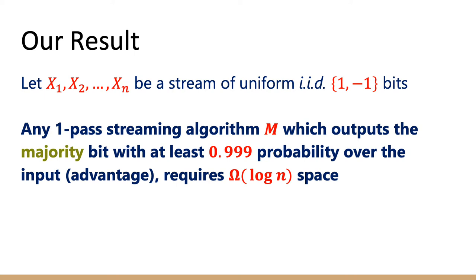What we prove is that majority is still hard on the uniform distribution. Specifically, let x₁, …, xₙ be a stream of i.i.d. uniform random bits. We show that any one-pass streaming algorithm that outputs the majority bit with at least 0.999 probability over the uniform input distribution requires Ω(log n) space.